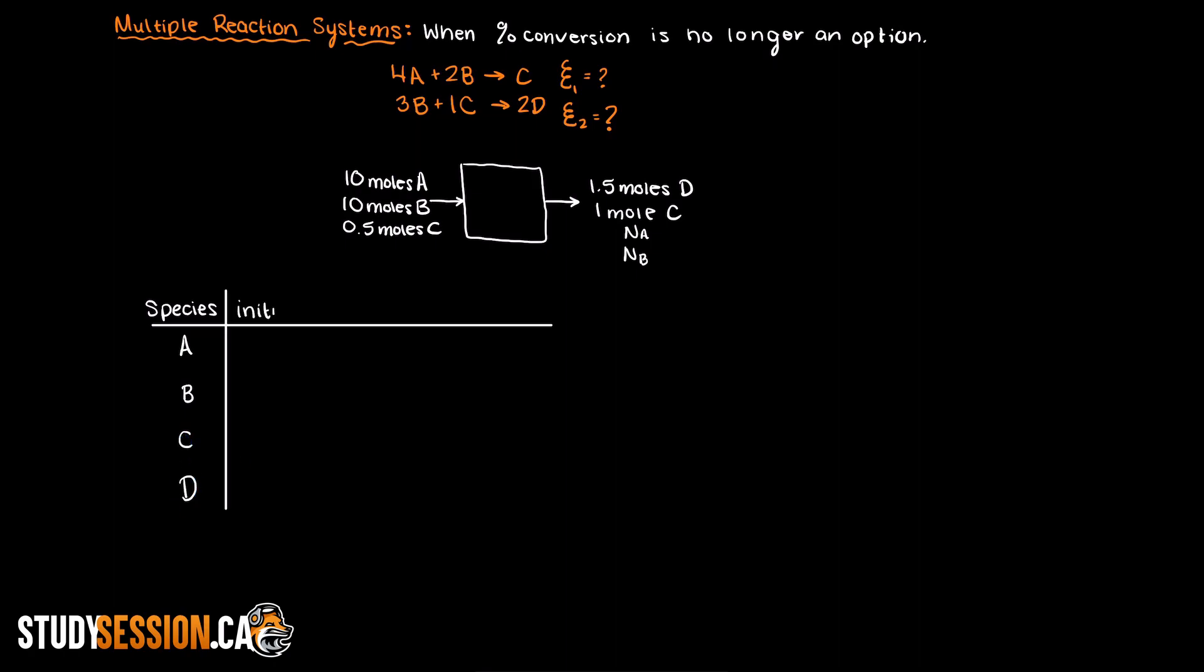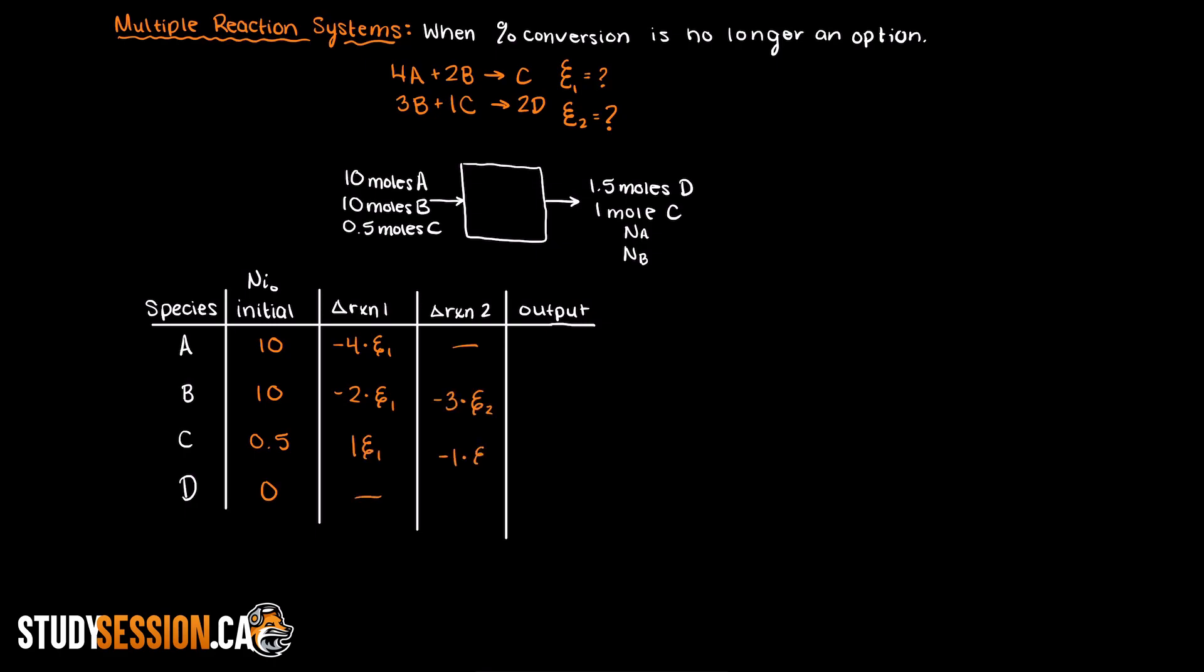To understand how much each of these two reactions will advance, let's create a table here to keep track of all of our values. The extent change here is the number of moles either consumed, which gets a negative value, or produced, which gets a positive value, times the extent of the reaction in which it has been involved. This should be more clear when examining the rows of B and C as they are both involved in reactions 1 and 2.